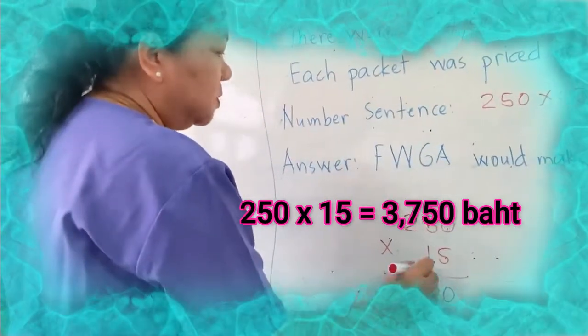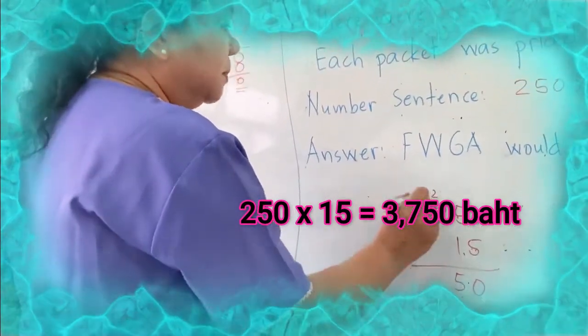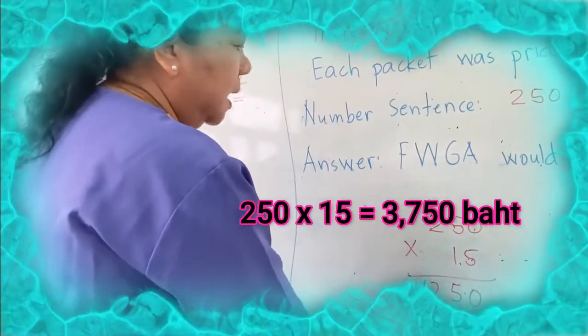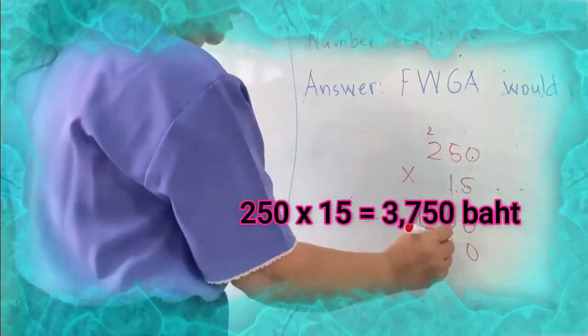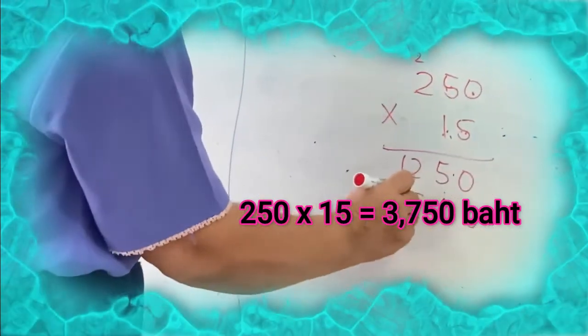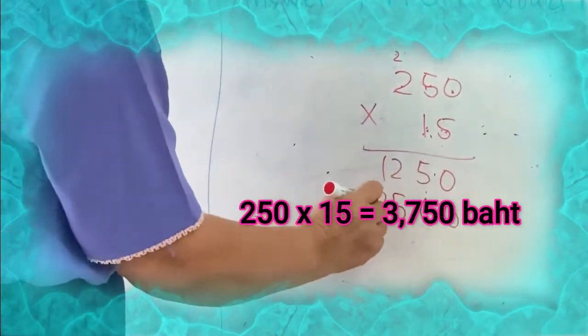5 times 0 is 0. 5 times 5 is 25, carry 2. 5 times 2 is 10, plus 2 is 12. Then right here add 0. 1 times 0 is 0, 1 times 5 is 5, 1 times 2 is 2.